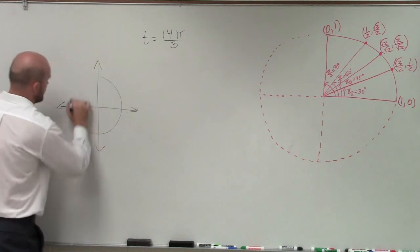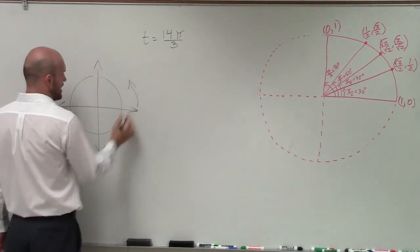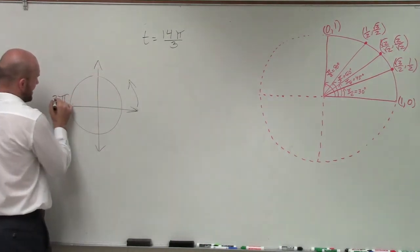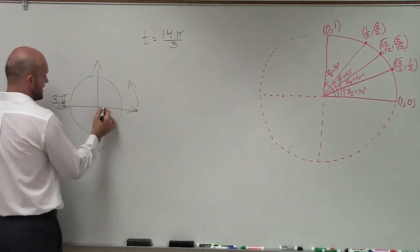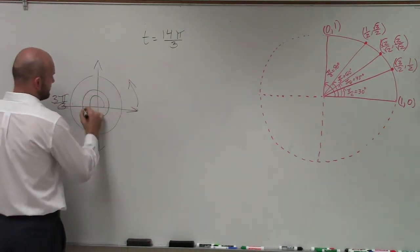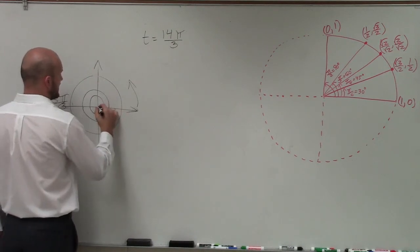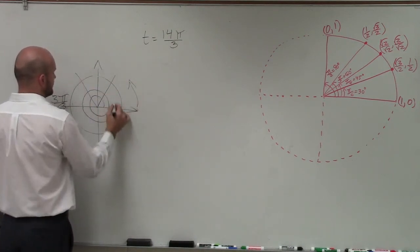We know that this is in the positive direction, so it's going to go that way. We know that halfway around the circle is π, that's 3 over 3. So then this is 3π, that's 6π, 9π, 12π, and then 13, 14, right?